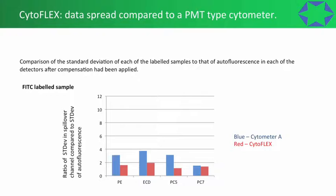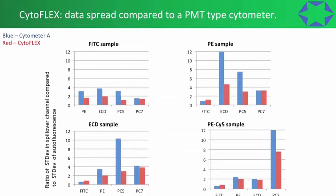Now we have the CytoFLEX in red, with lower values being better — less data spread. There is less data spread from the FITC sample into neighboring channels on the CytoFLEX. Looking at other stained samples: for the PE sample we've got the most data spread into neighboring channels, but in each case there is less data spread in the CytoFLEX compared to the other cytometer. For the ECD sample, there's quite a large amount of data spread in cytometer A, but this is much lower with the CytoFLEX.